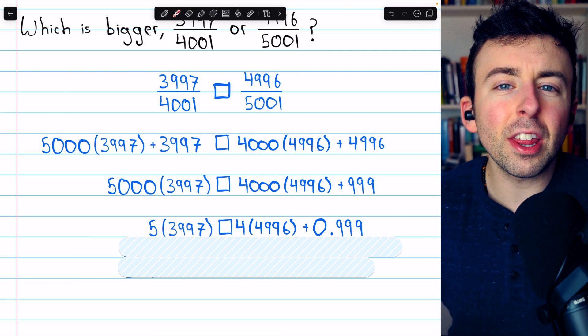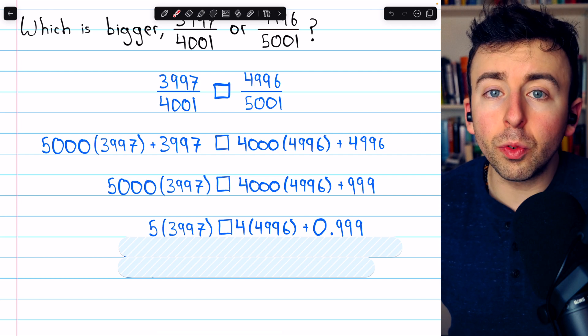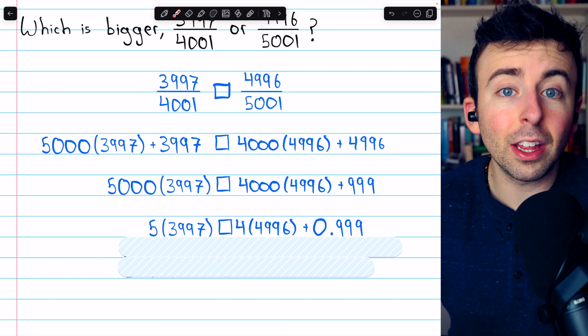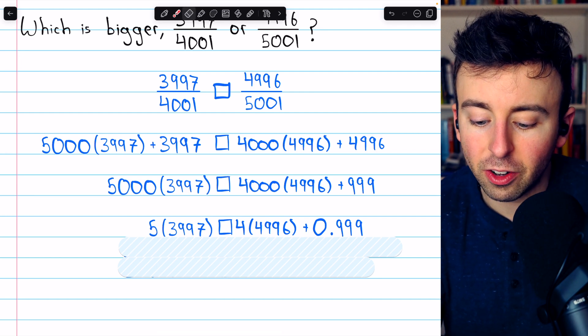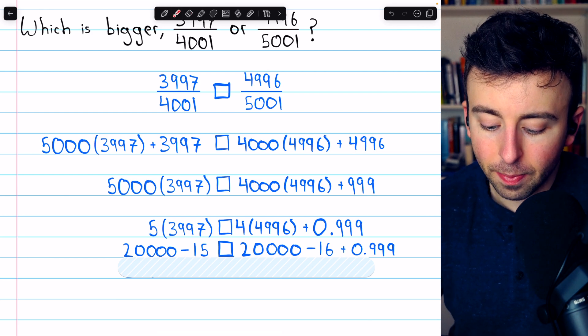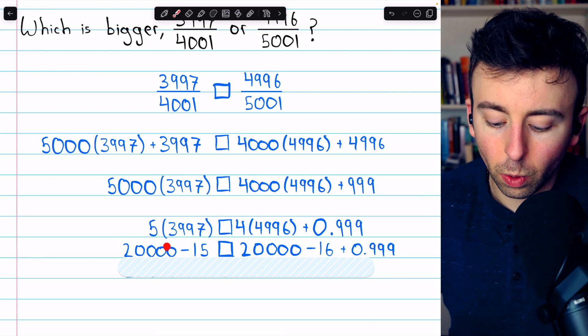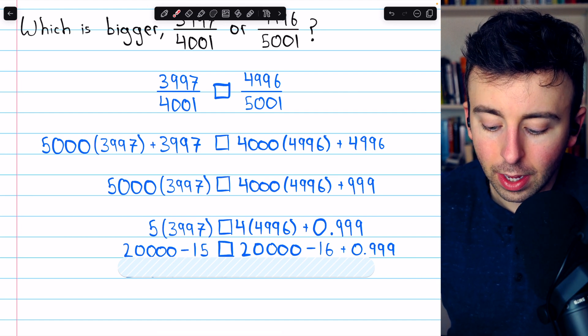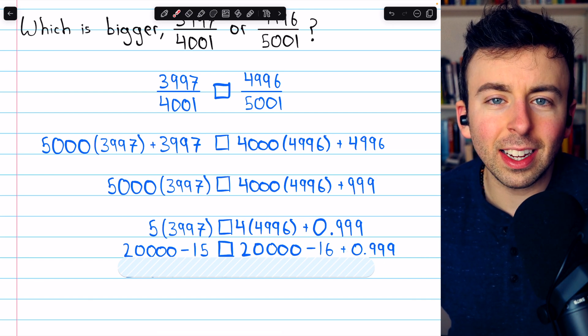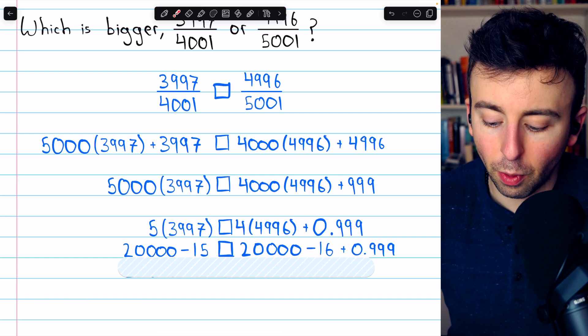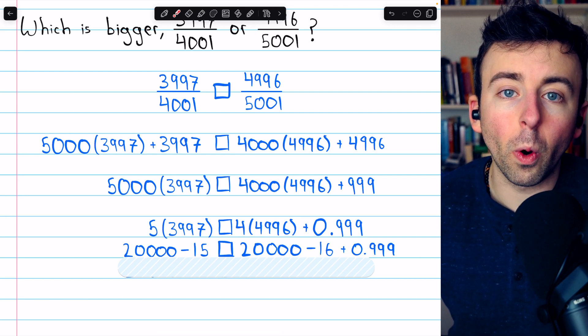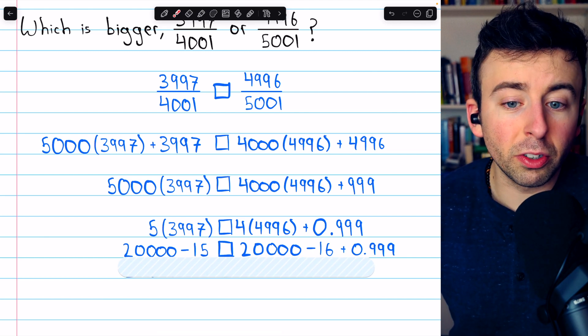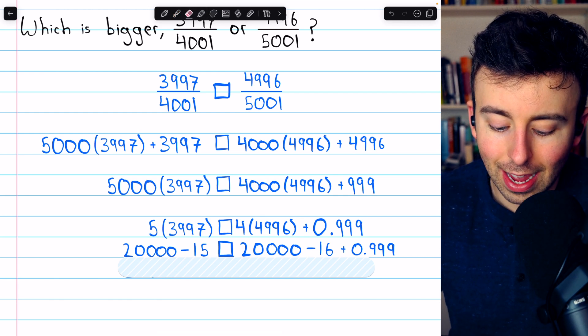3,997 is just 3 short of 4,000. So if we just do 4,000 times 5, which is very easy, then we just have to subtract 3 times 5 in order to correct the calculation. So 5 times 3,997 is 5 times 4,000 or 20,000 minus the 3 extra copies of 5 that are in this number. Same thing on the other side. 4,996, that's basically 5,000. So 5,000 times 4, but then we have to subtract the 4 extra copies of 4 that are in this number. So subtract 16. The idea here is we're just doing this with as little computational complexity as possible.